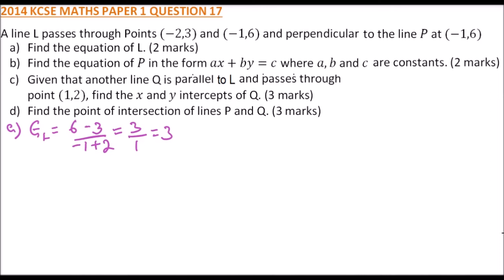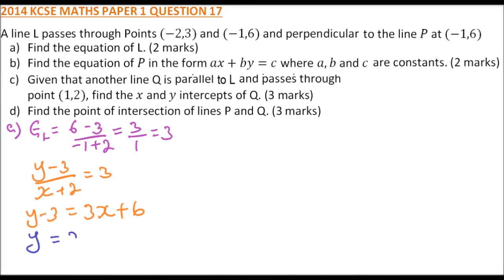We use one of the points — let's use minus 2, 3. So we say y minus 3 divided by x minus minus 2, that becomes positive, equals 3. Cross multiply: y minus 3 equals 3x plus 6. Take minus 3 to the other side — it becomes positive. So y equals 3x plus 9.